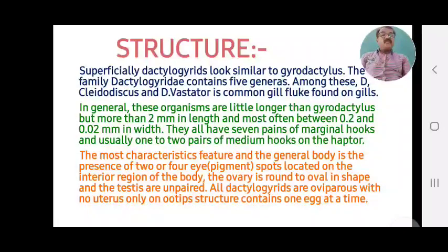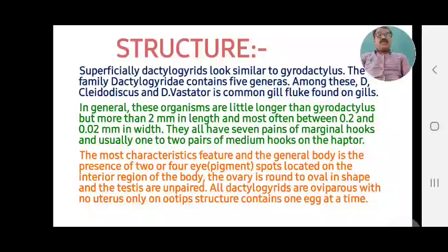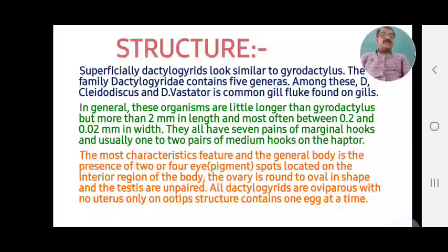They all have 7 pairs of marginal hooks and usually 1 to 2 pairs of medium hooks on the haptor. The most characteristic feature is the presence of 2 or 4 eye pigment spots located on the interior region of the body. The ovary is round to oval in shape and the testes are unpaired. All Dactylogyrus are oviparous, with the uterus containing only 1 egg at a time.